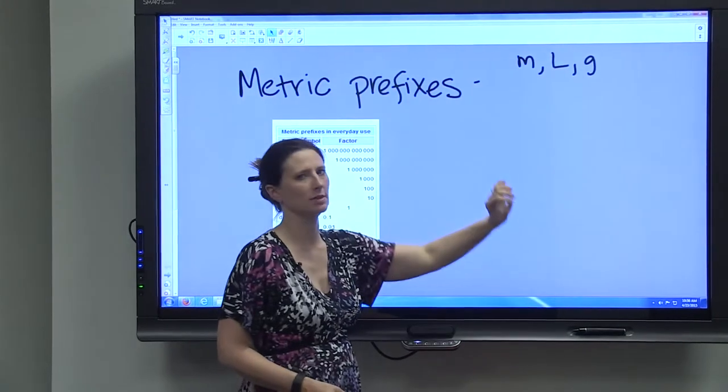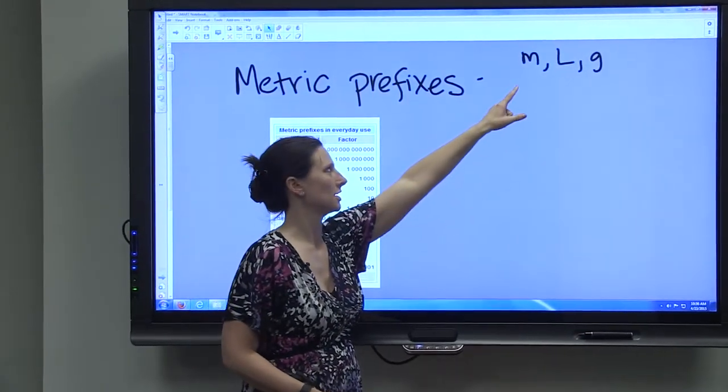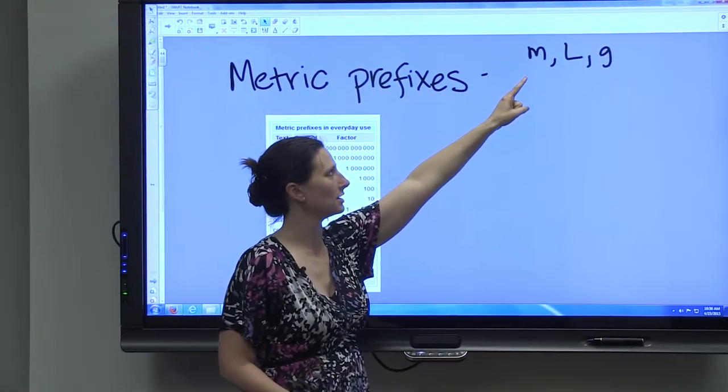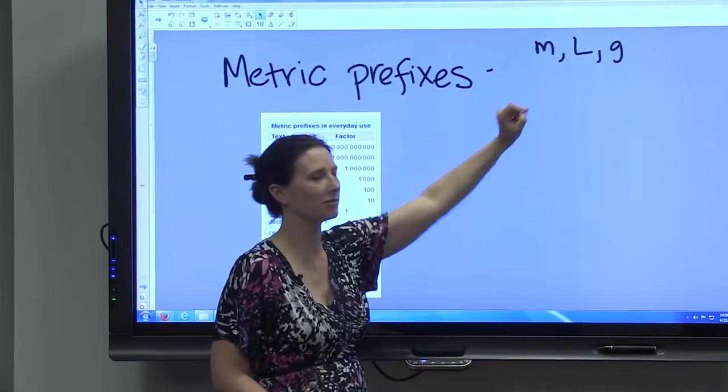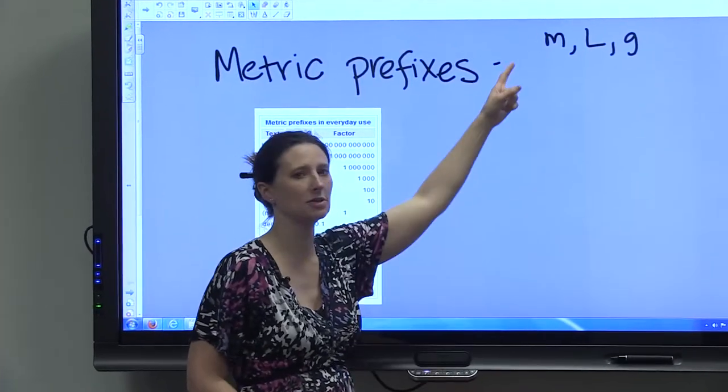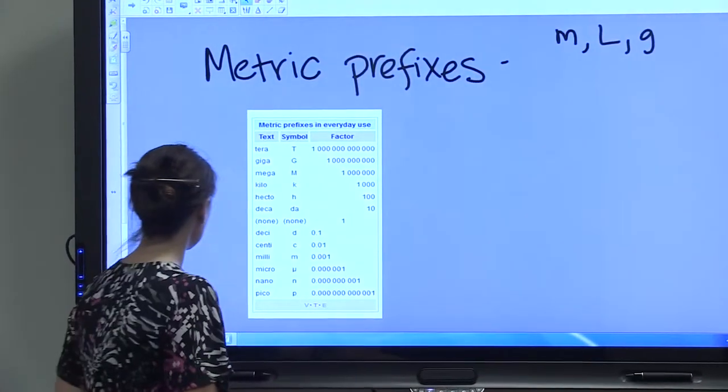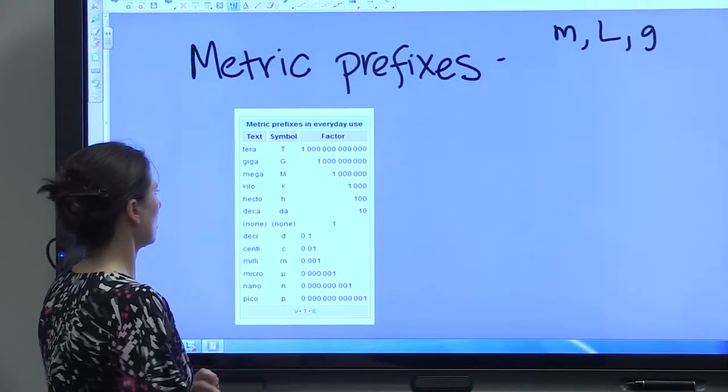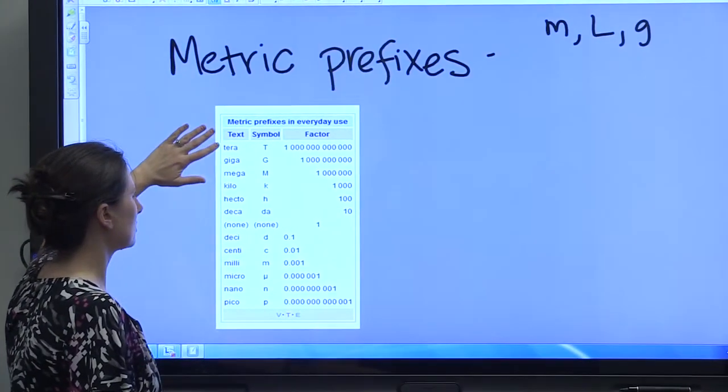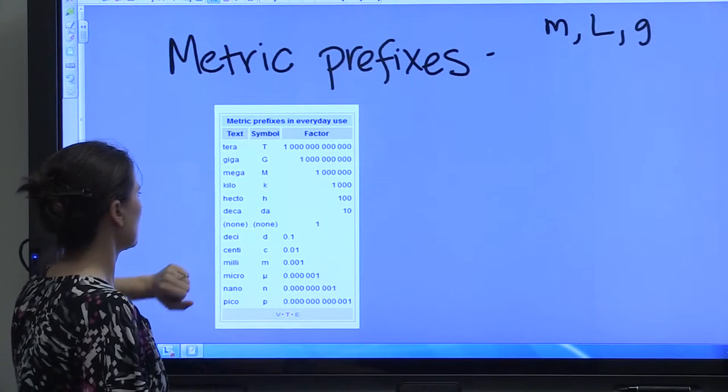If you'll recall, the standard measurement for weight is the gram, the standard measurement for volume is the liter, and the standard measurement for length is the meter. So if you look at these metric prefixes: Tera, giga, mega, kilo, hecto, deca.